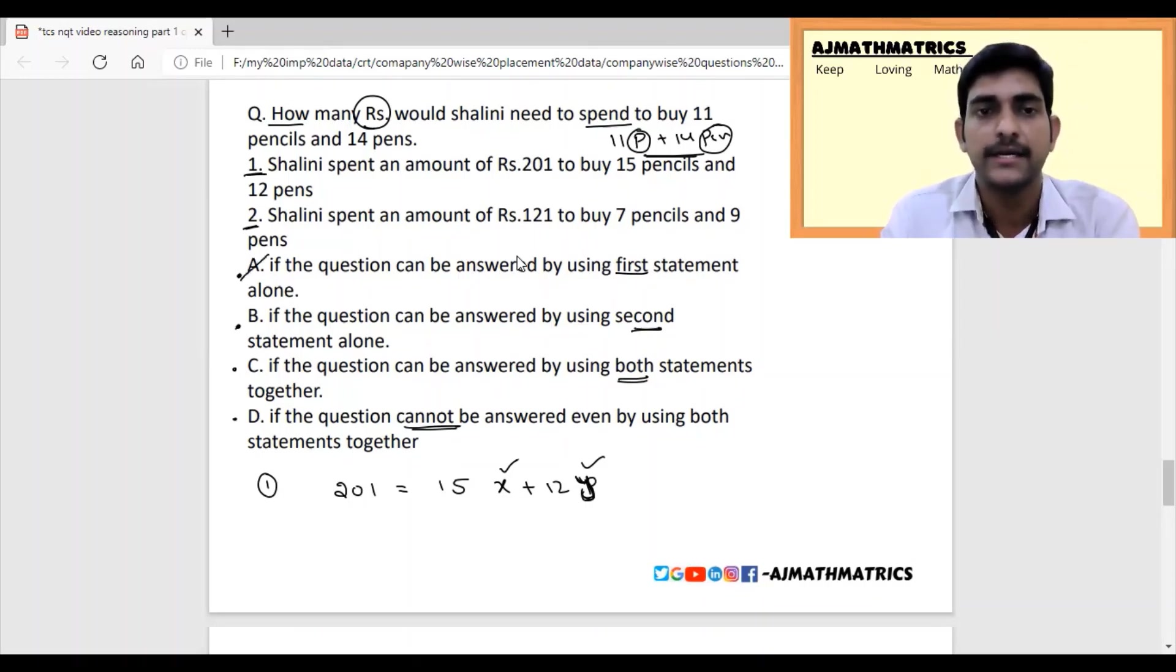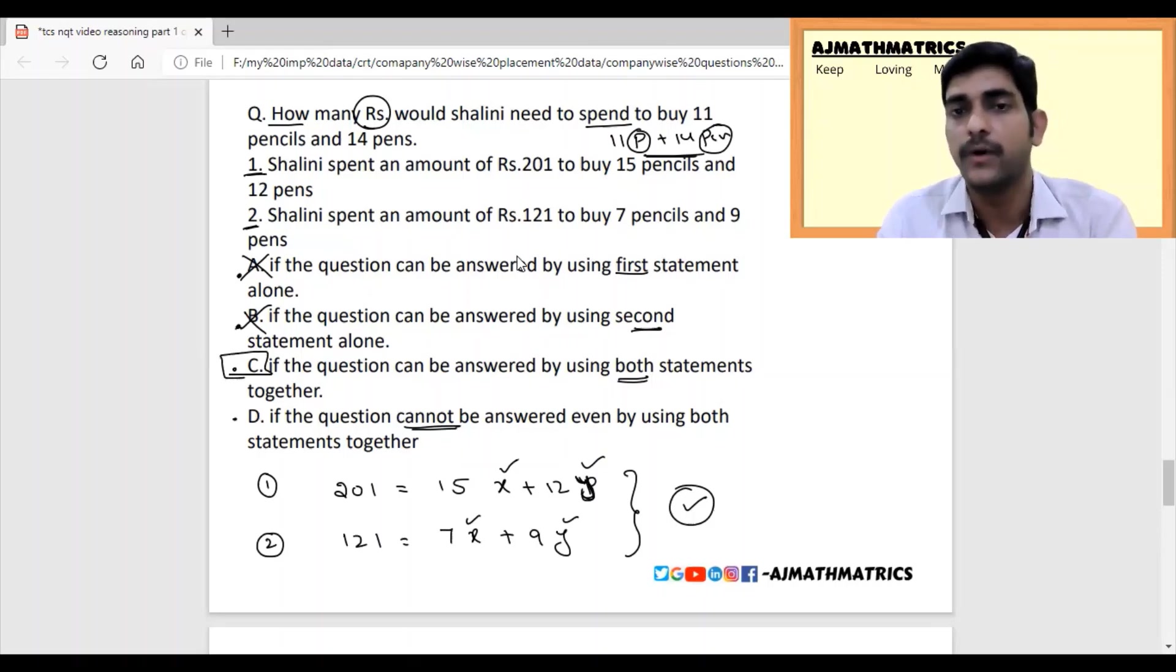Statement 1: Shalini spent 201 rupees buying 15 pencils and 12 pens. Let pencil be x and pen be y. This statement alone is not sufficient because we have two unknown variables. According to algebra, we require two equations. So A is eliminated. Statement 2: Shalini spent 121 rupees to buy 7 pencils and 9 pens. Two alone is not sufficient. But if these two statements are combined, we can definitely get the answer for x and y. So C is the answer - both statements together are needed.